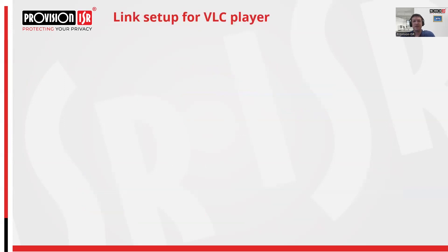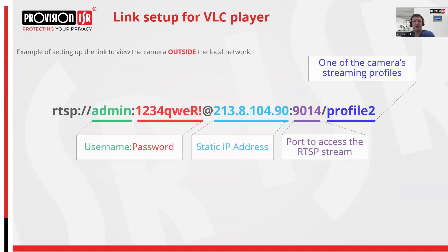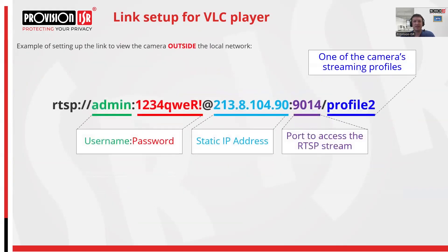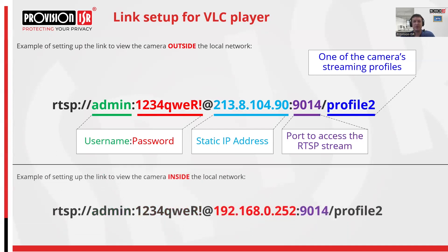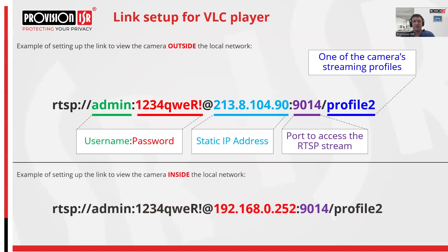Now let's delve into the link that VLC Player will use to view the camera. In the first example, where we are accessing a camera outside of our network, the first part of the link includes the username and password of the camera. The second part comprises the network address of the router behind which the camera is located, along with the port through which routing is directed to this camera's address. The third part is a profile number, representing the quality profile defined in the camera. If we want to display a camera on our local network, we can simply use the internal network address and port that we defined earlier.